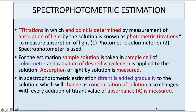In spectrophotometric estimation, titrant is added gradually to the solution and there is a change in the absorbance value observed as the concentration of the solution changes. With every addition of the titrant, the absorbance value is measured and based on that we can determine the concentration of the unknown solution given.